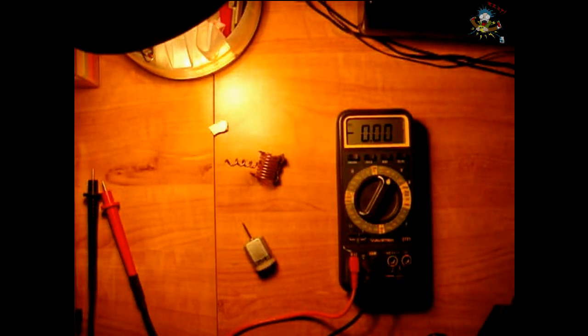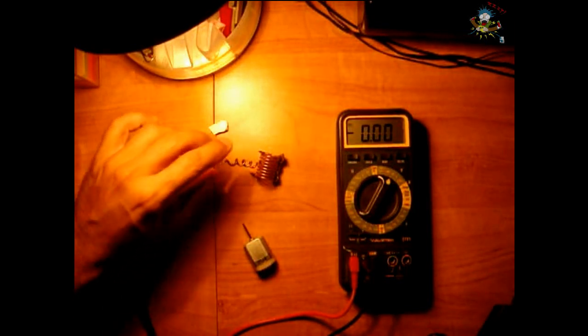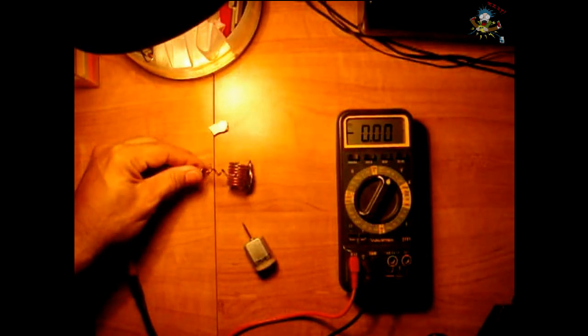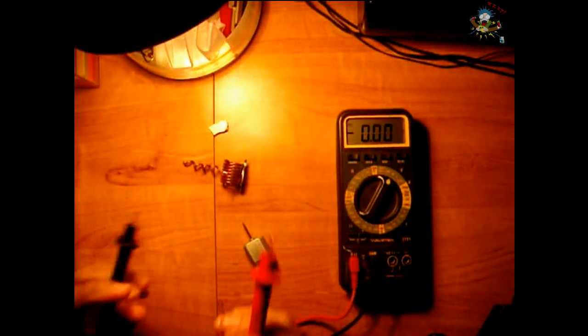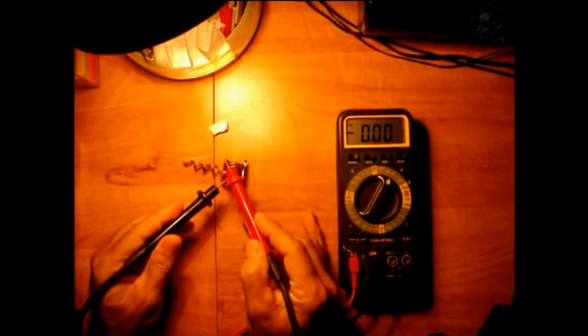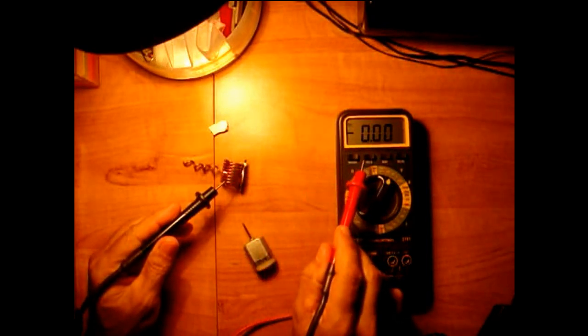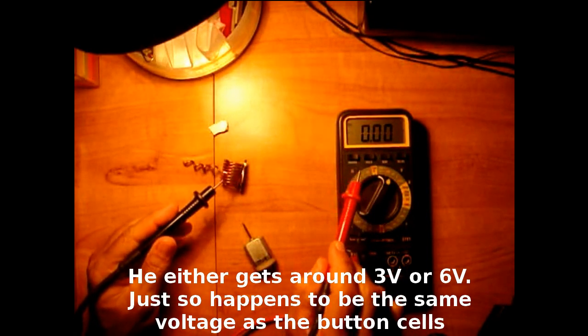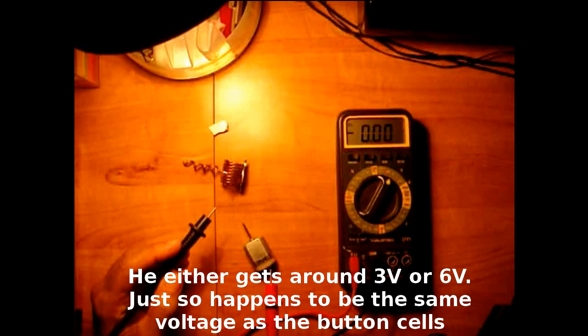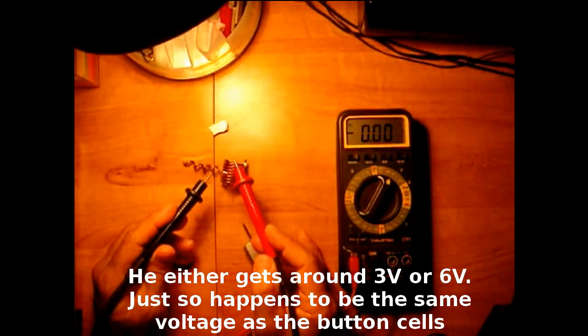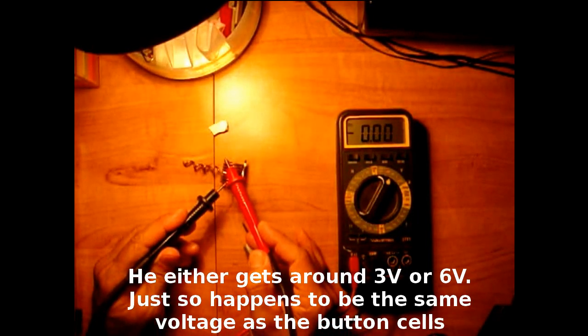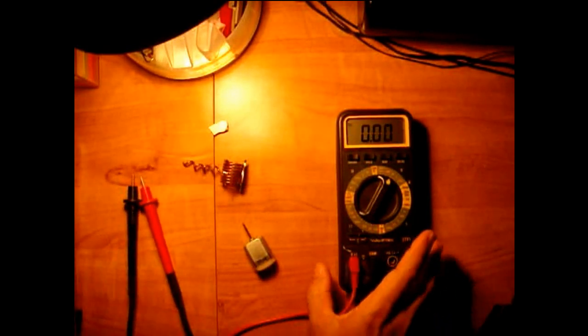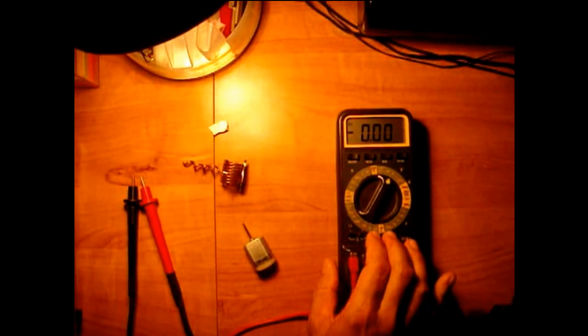The more likely way that that video was faked was this way you're going to see here now. When he checked the voltage, it came up as 6 volts, or around 5.92 on the meter. The only way that we can get that to happen with this coil would be to actually open up the digital multimeter.